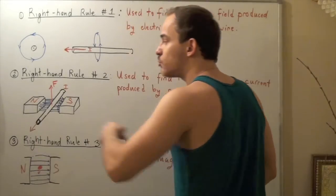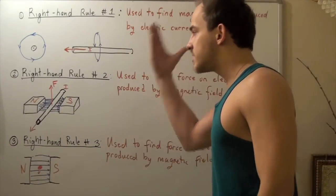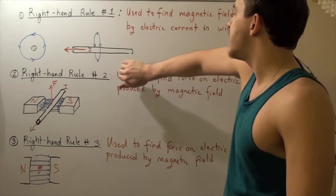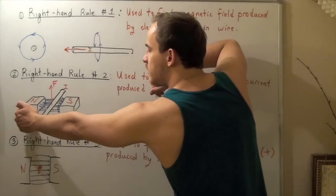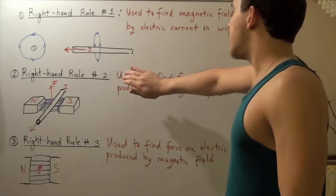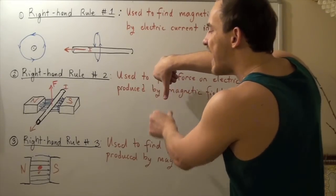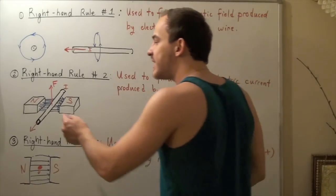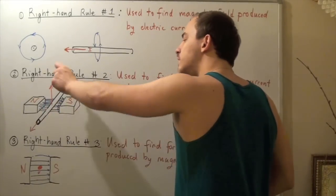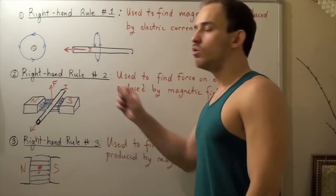Now suppose I reverse my direction of the current so the current is flowing into the page. I could use the same rule. I orient my hand into the page, then rotate it the same way because my magnetic field lines are still going this way. My current is traveling into the page, I orient it that way, and I simply raise my thumb. Now we see my force is pointing downwards. Because if the magnetic field stays the same and I flip my current direction, my force will flip — the magnitude stays the same, but my force will flip. That's how you use right-hand rule number two.